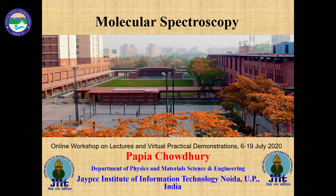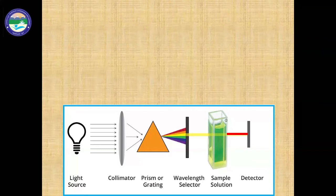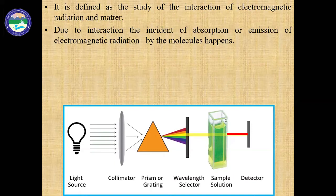First we have to define what is spectroscopy. Spectroscopy is the study of the interaction of light — or electromagnetic radiation — and matter. Matter means it may be an atom, it may be a molecule. When the incident light interacts with a material, two phenomena may happen: one is the absorption of the radiation, or another will be the emission of the radiation by that interacted matter.